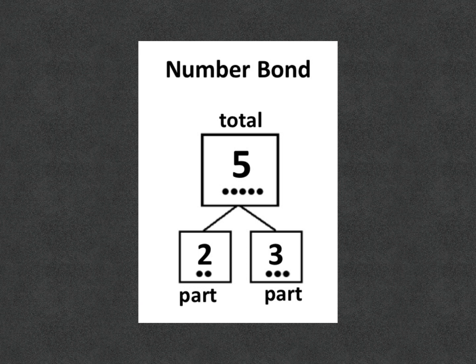When using a number bond chart, you put the total number in the biggest box on the top, or sometimes it'll be on the side over here or over here. And then you put one part of the total into this box and one part of the total into this box. Two plus three is five. So when you break that apart, you can break it into many different ways. Two and three is one of them.